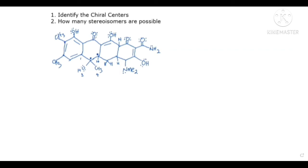Moving up, this double bond makes it impossible for this carbon to have four different groups, so it doesn't qualify — it only has three groups. This oxygen has two lone pairs, which are the same, so it can only have two other groups; the two lone pairs disqualify it. Similarly, these carbons with double bonds can only have three groups attached, not four, so they are not chiral centers either.